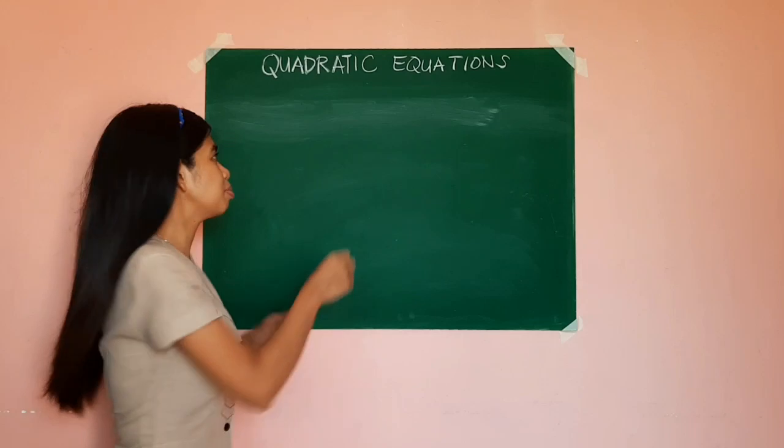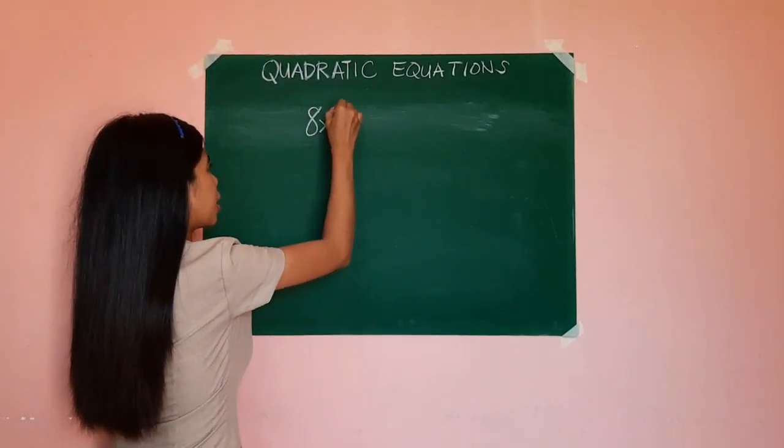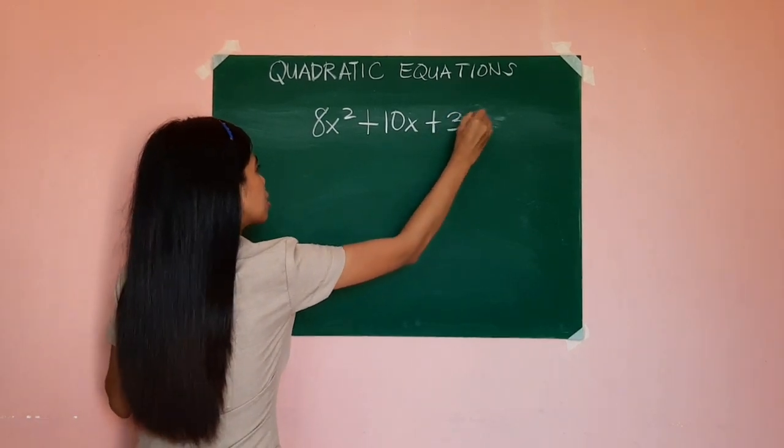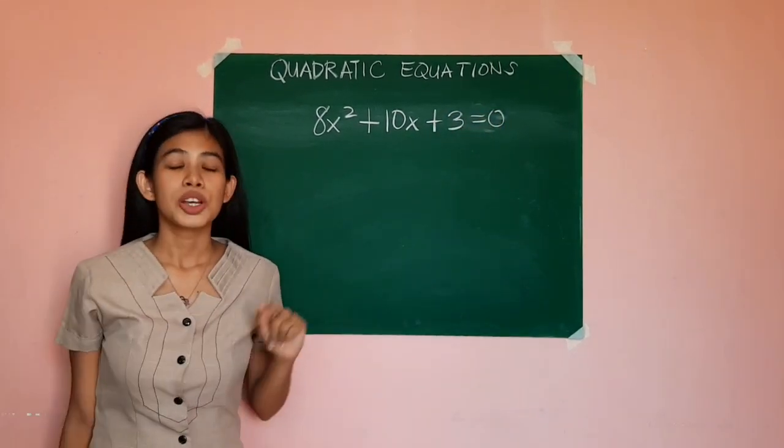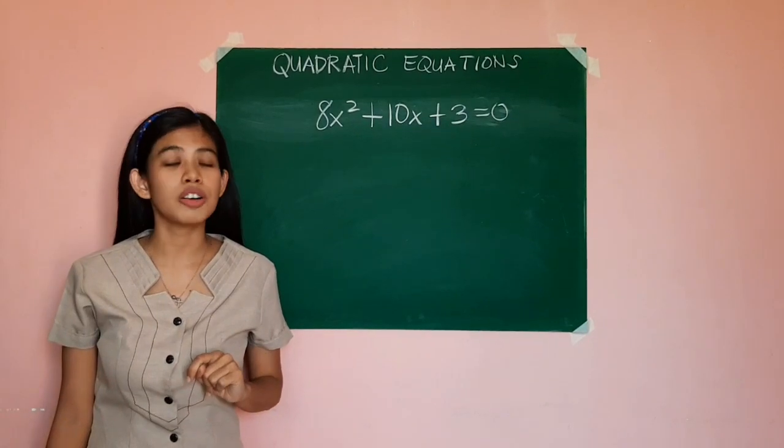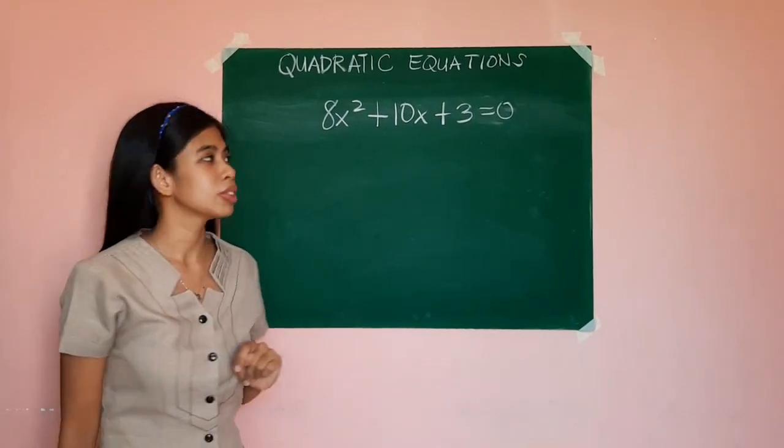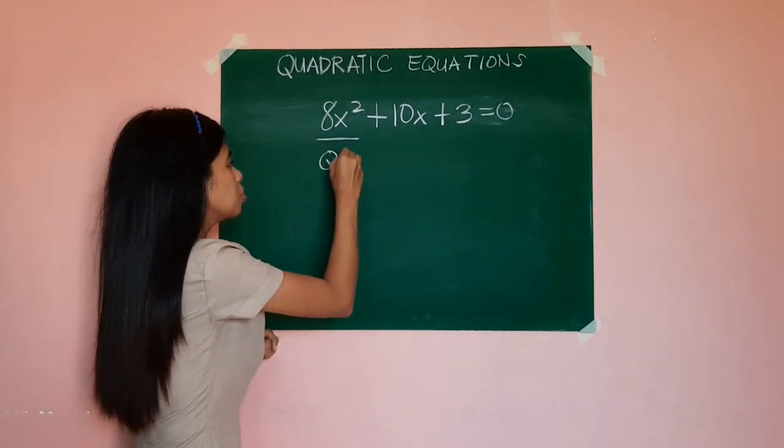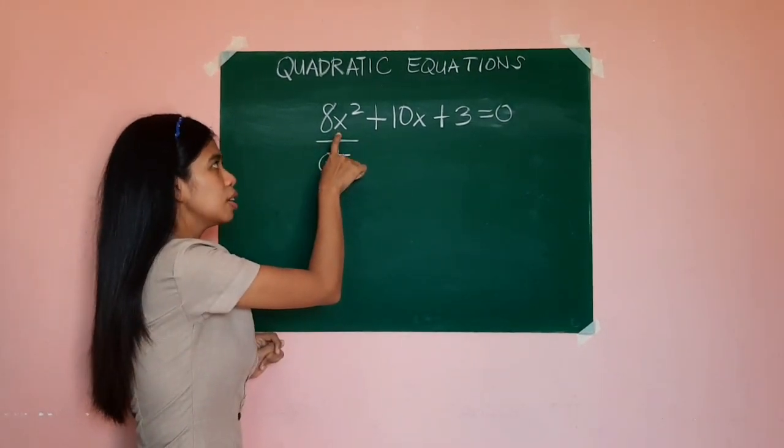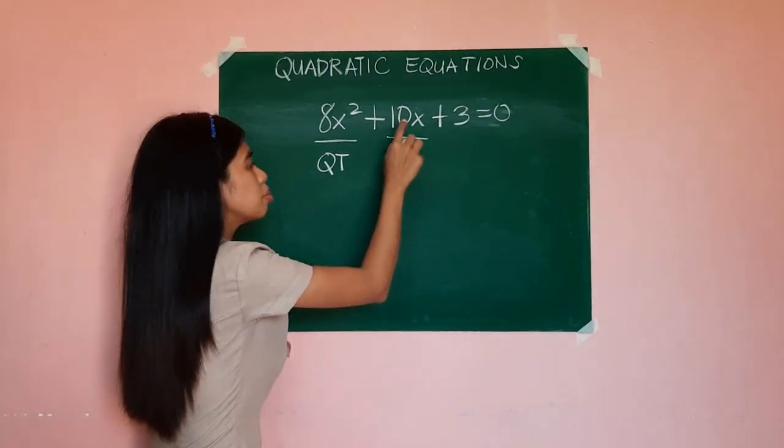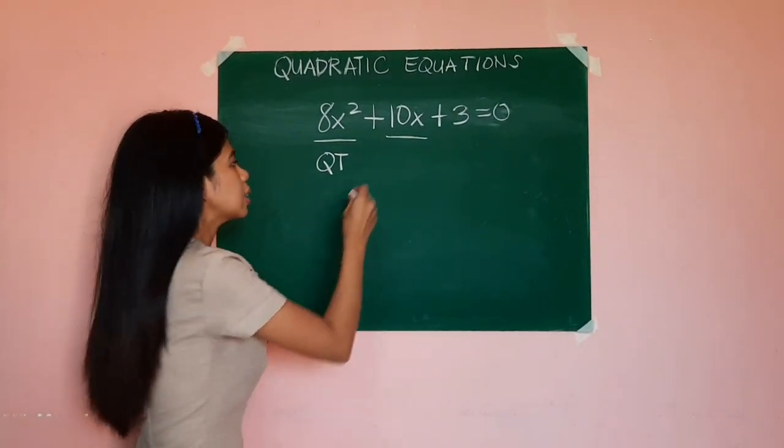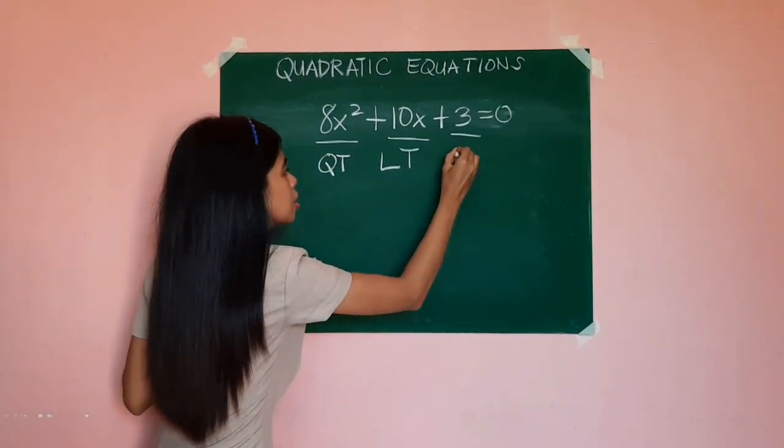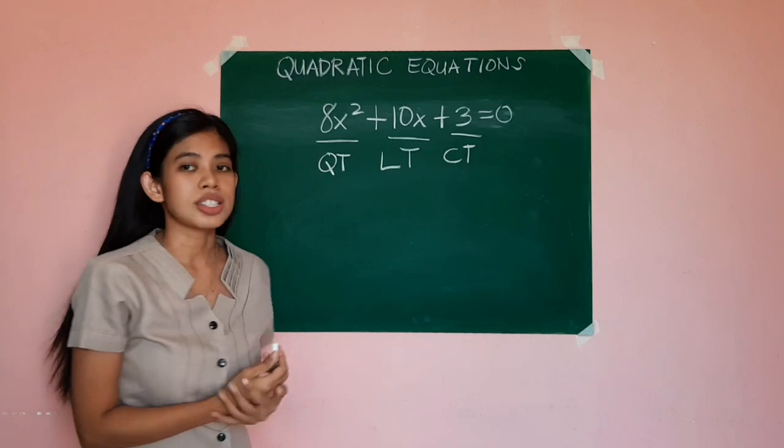Suppose you were given 8x² + 10x + 3 = 0. This is an example of a quadratic equation. We can say that 8x² is a quadratic term since its variable is in degree 2, and 10x is the linear term, and 3 here is our constant term.